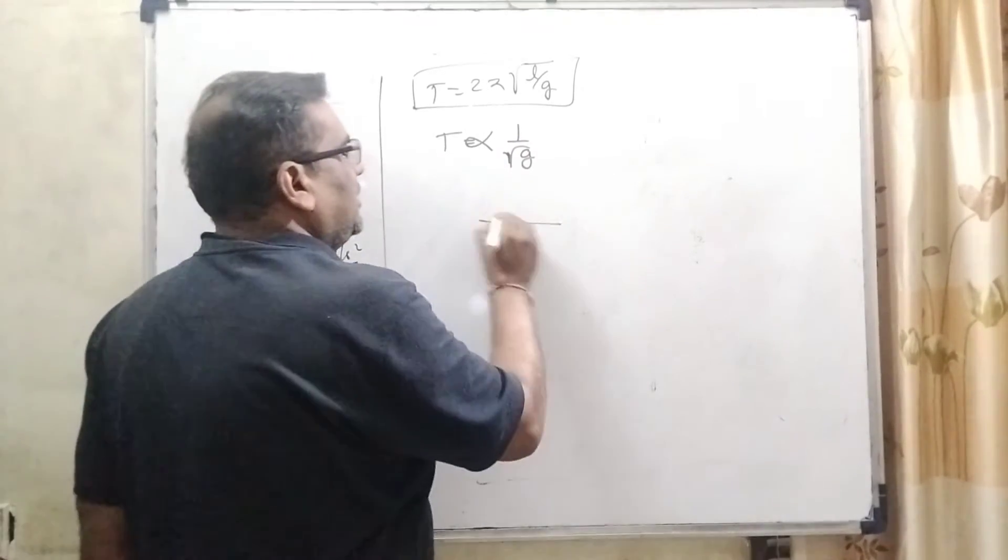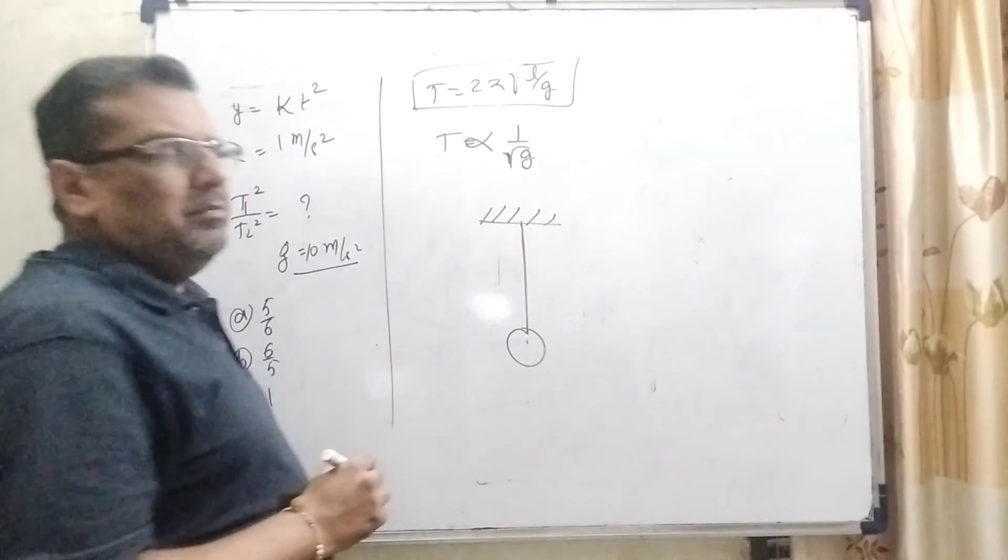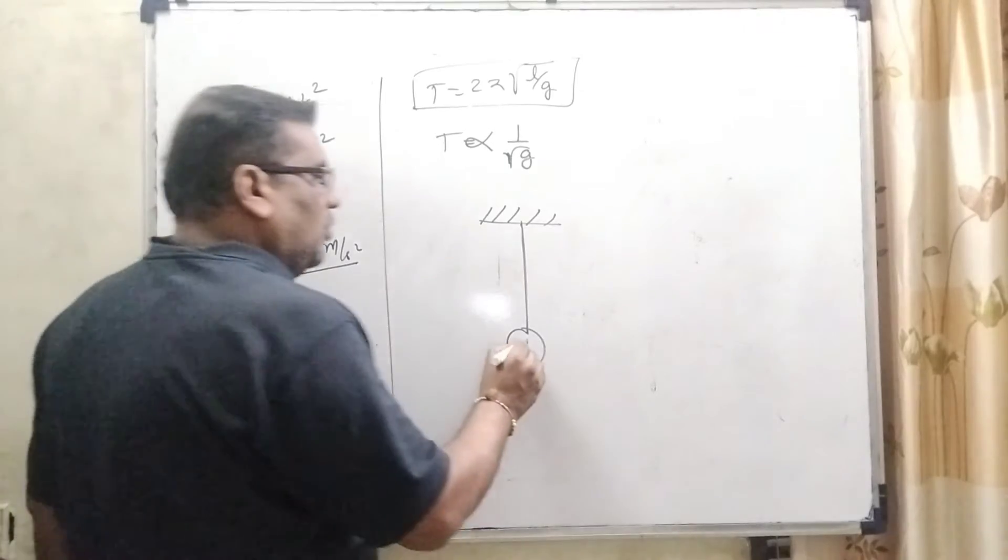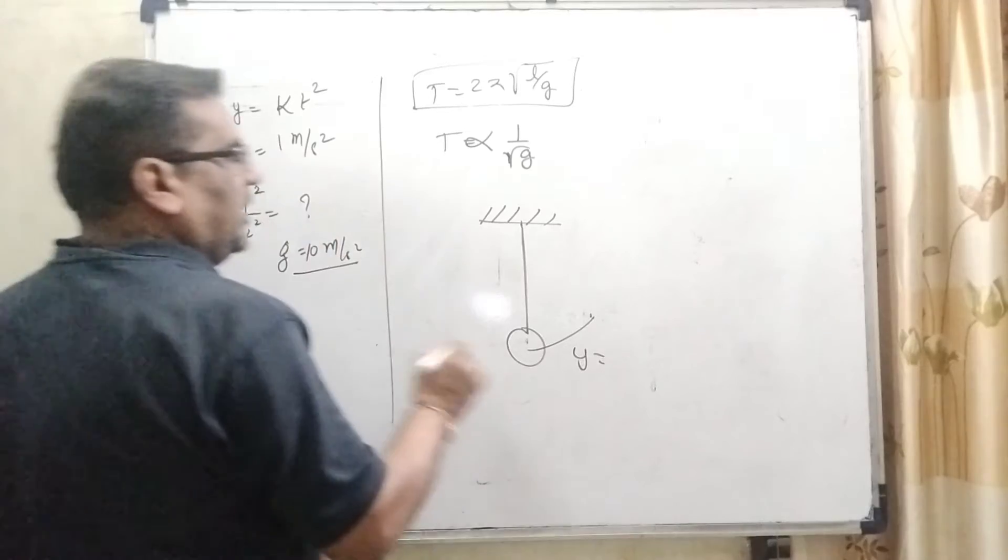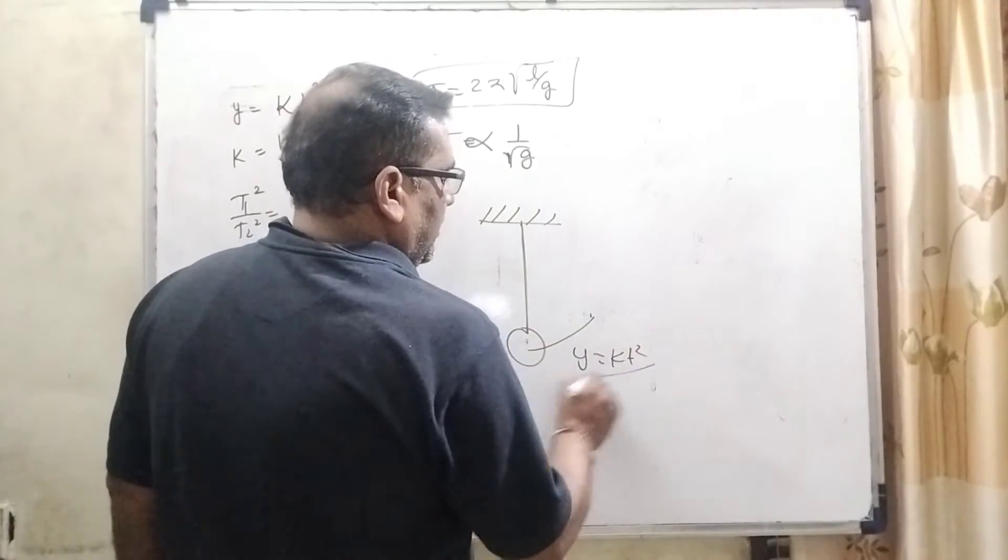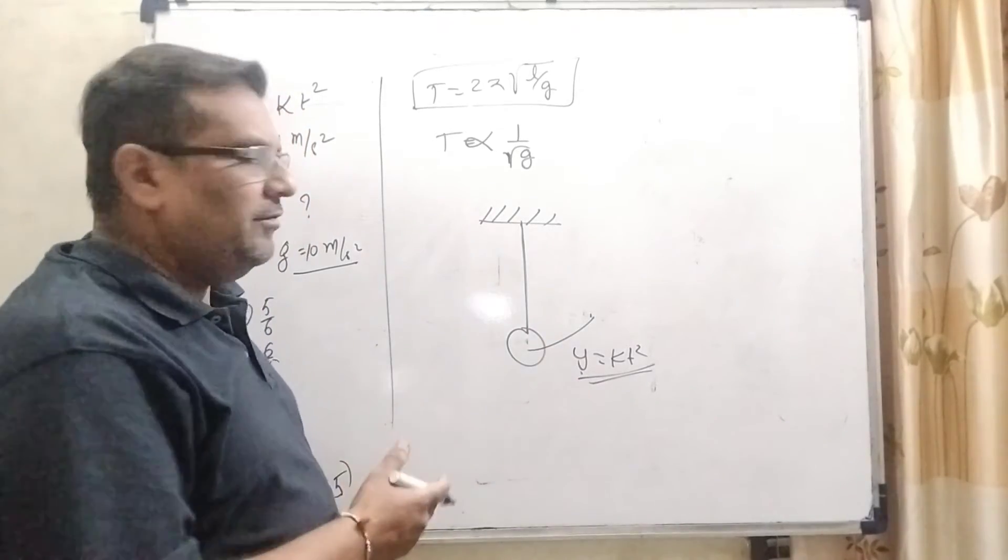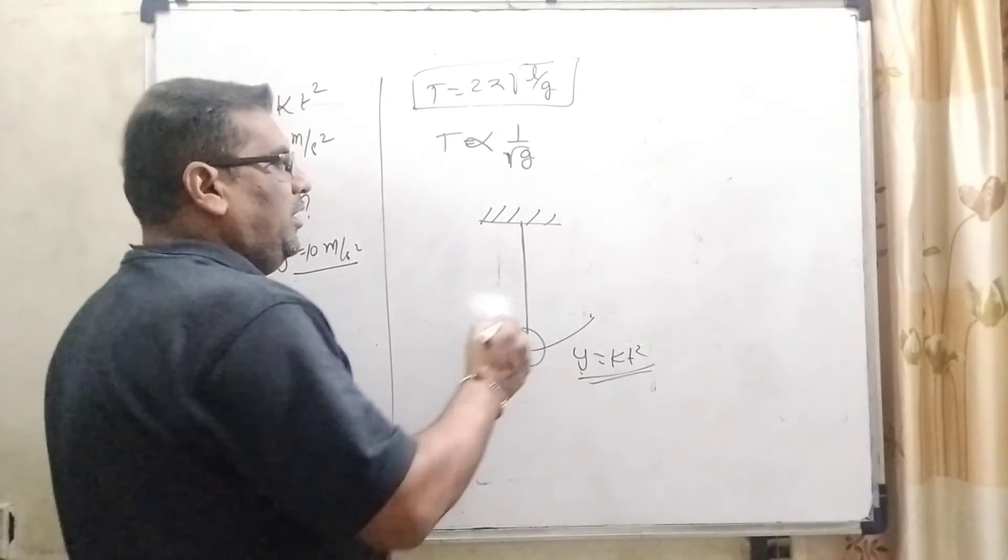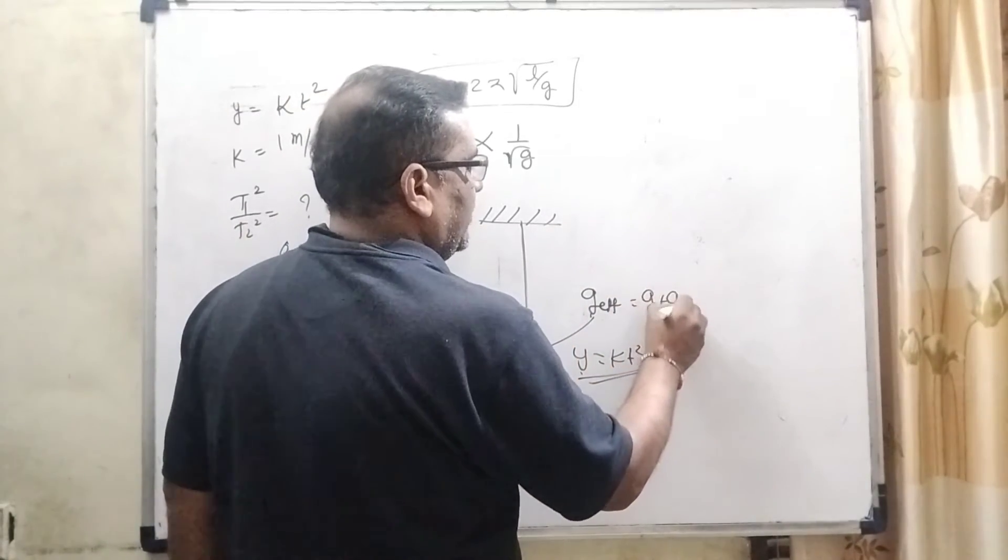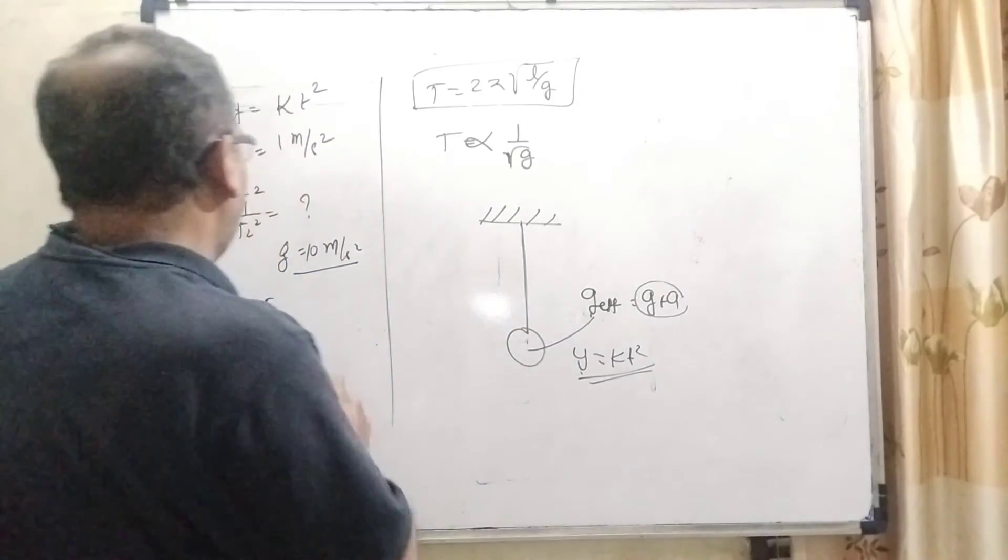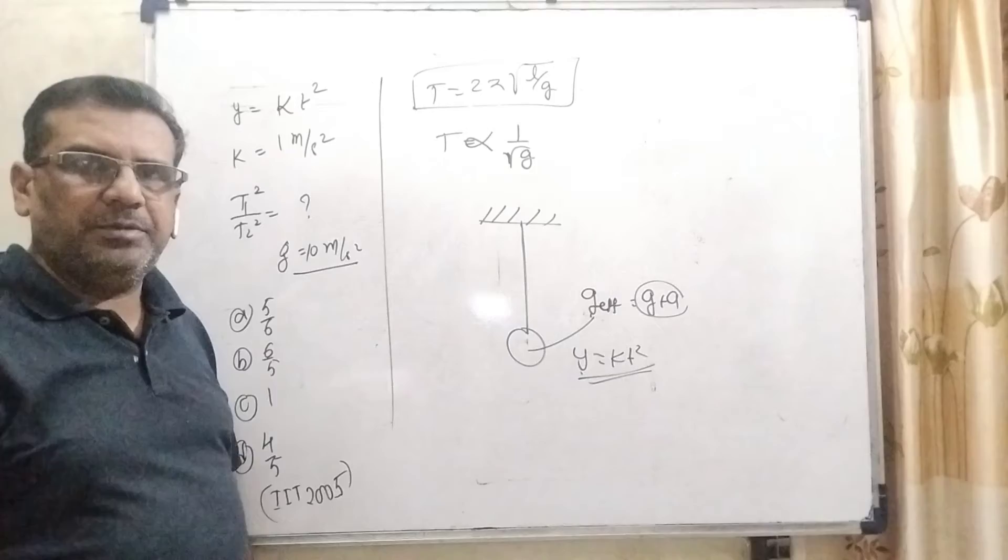Here we have given in the question a simple pendulum which is hanging with the thread, massless thread. And if it goes upward, then use the formula y equal to kT square. So, by using this formula double differentiation because first differentiation gives the velocity and second differentiation we get the acceleration. So, effective G here is equal to G plus A. We get G plus A. And that time we have to find out T1 square upon T2 square. It is our key point of this question.